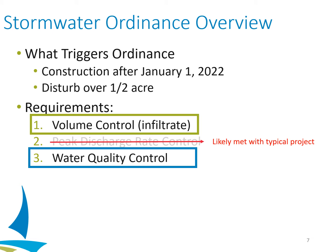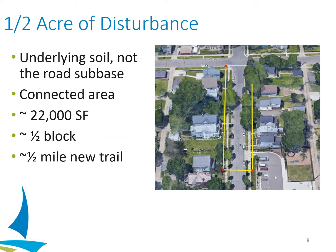On a typical transportation project, we are likely going to meet the second requirement — the peak discharge rate control — on a standard project. The reason is that most of our projects in the city are reducing impervious area, so we're assuming we're meeting that rate control requirement. To demonstrate compliance, you'll just need to briefly explain the reduction in impervious area and why that results in a reduced peak discharge rate. That really only leaves the volume control and the water quality control.